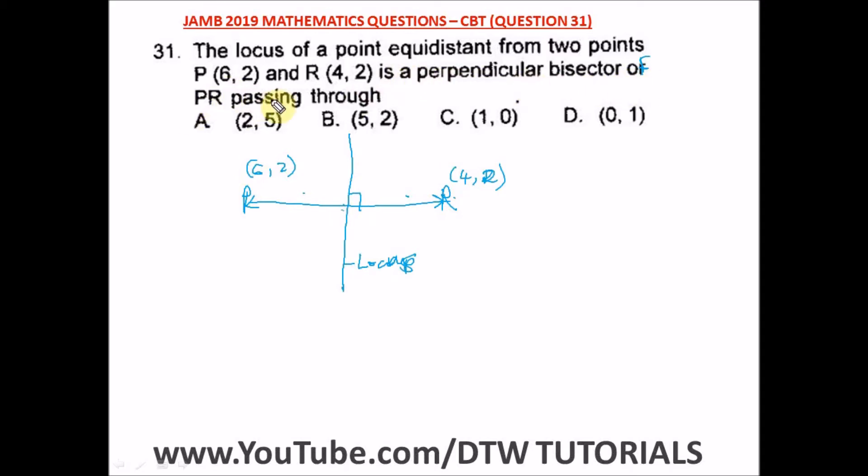The perpendicular distance of PR passing through this point. From here it just means we should find the midpoint of this line, that is PR. That's what it means because the locus of a point equidistant, equal from this side and equal from this side. So to get this point is just simplifying the midpoint of this line.